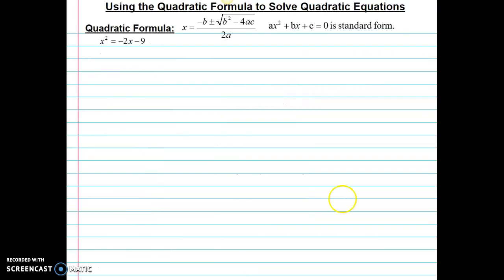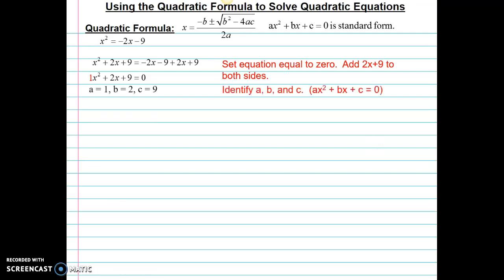Okay, guys, here's our last example. Again, when we want to use the quadratic formula or factoring, we want to set our equation equal to zero. So to set this one equal to zero, I need to add 2x plus 9 to both sides. Then I'll identify a, b, and c again. Here, a is 1, b is 2, and c is 9.